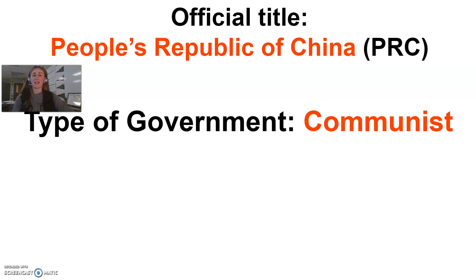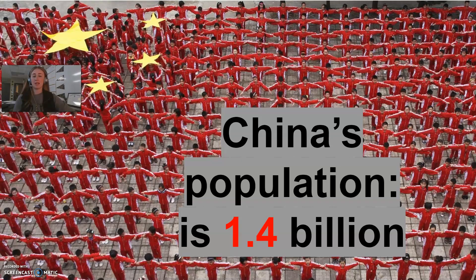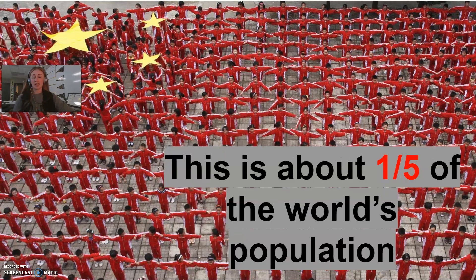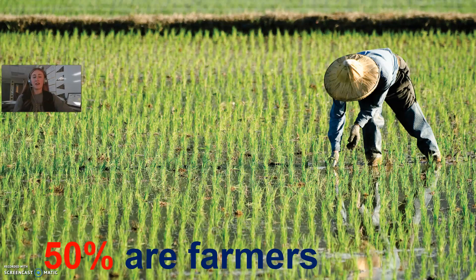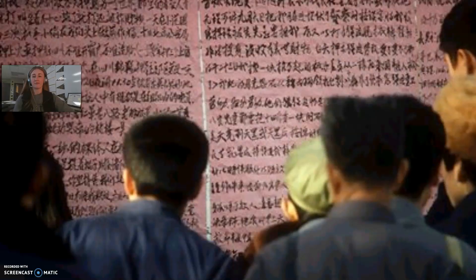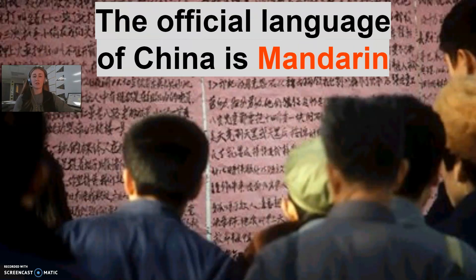The official title of China is actually the People's Republic of China, or the PRC, and the type of government in China is a communist government. The capital city of China is Beijing, and China's overall population is about 1.4 billion people, which is about a fifth of the world's population — that's like 20% of everybody on the entire earth. 50% of the people who live in China are farmers, and the official language of China is Mandarin.